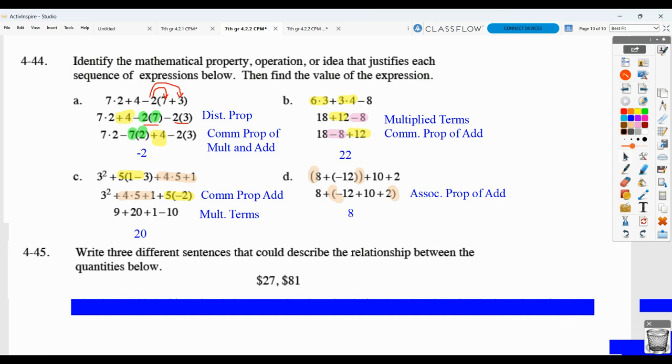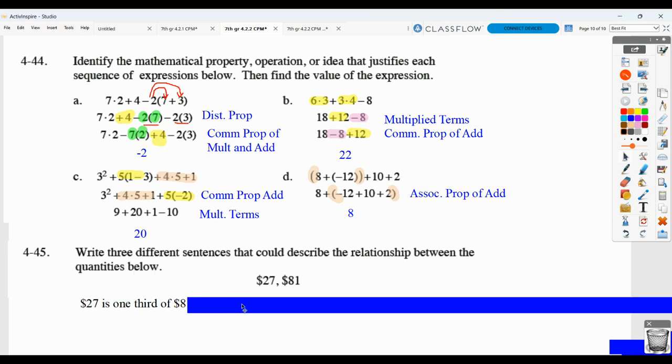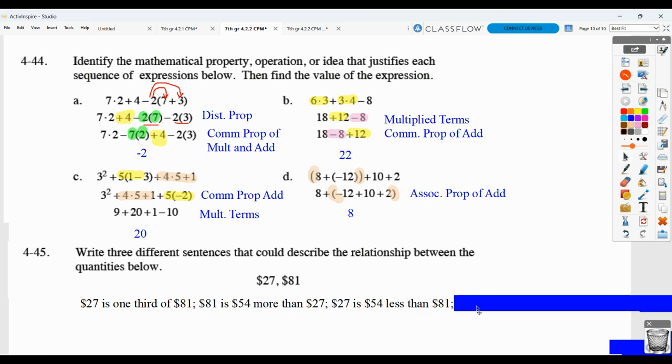And then, for this one, they want you to write three different sentences that could describe the relationship between these quantities. Twenty-seven dollars and eighty-one dollars. So, you could say, twenty-seven dollars is one-third of eighty-one dollars. Because if you multiplied twenty-seven times three, you'd get eighty-one. You could say eighty-one dollars is fifty-four dollars more than twenty-seven dollars. Because if you added fifty-four and twenty-seven, you'd get eighty-one. You could say twenty-seven dollars is fifty-four dollars less than eighty-one dollars. You could say eighty-one is three times twenty-seven dollars. You only need three different sentences, so you don't need all four.